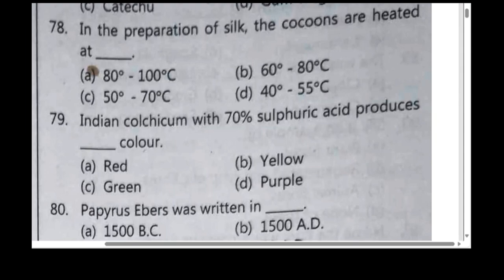In the preparation of silk, the cocoons are heated at 60 to 80 degrees Celsius — option B. Indian calcium with 70% of sulfuric acid produces yellow in color — option B.